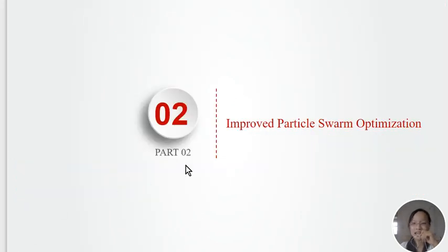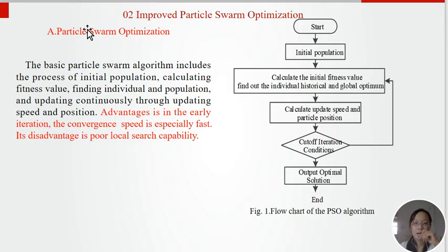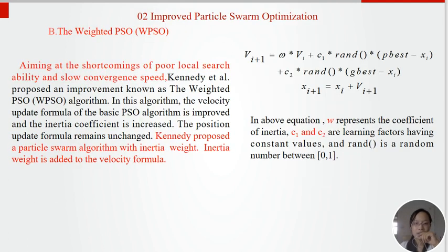Part 2: Improved Particle Swarm Optimization. The basic Particle Swarm Optimization includes the process of initial population, calculating fitness value, finding individual and population optima, and updating continuously through updating speed and position. Its advantage is in the early iteration, the convergence speed is especially fast. Its disadvantage is poor local search capability. The weighted PSO (WPSO), aiming at the shortcomings of poor local search ability and slow convergence speed, Kennedy proposed a Particle Swarm algorithm with inertial weight. Inertial weight is added to the velocity formula.